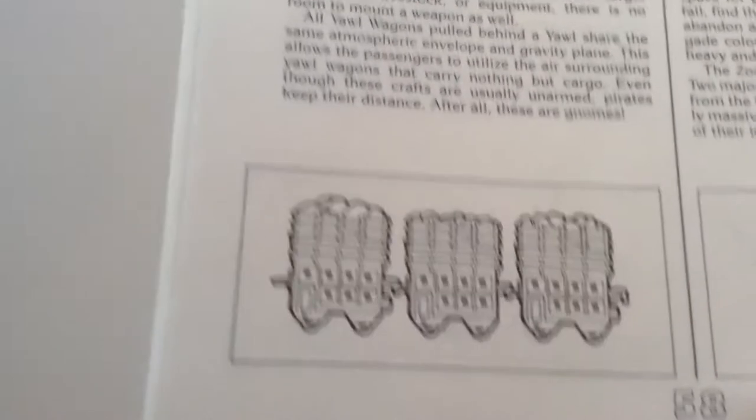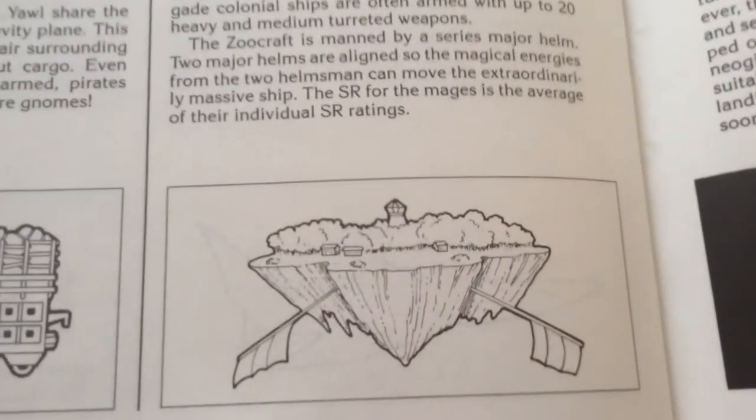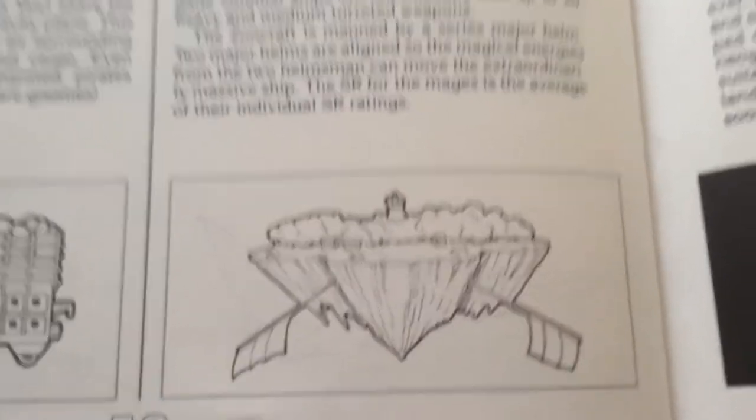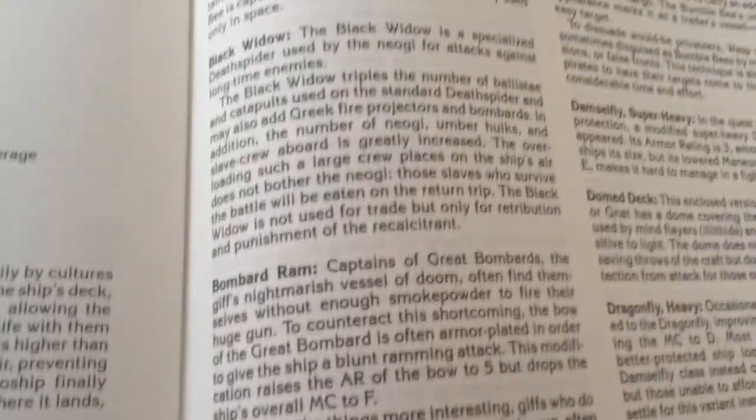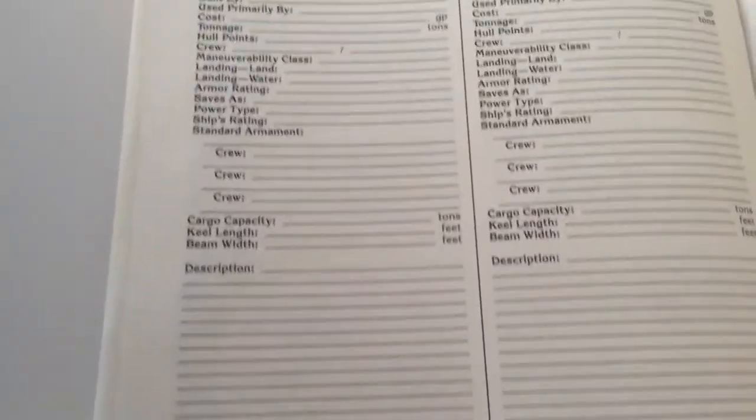On the next page you can see the wagons that pull it. It pulls, it's like a train. The zoocraft is a colonization ship. And it has a few pages where it describes other ships that are variations of existing ones.